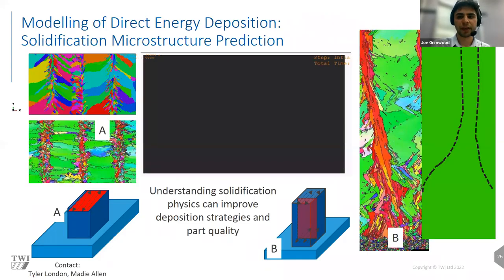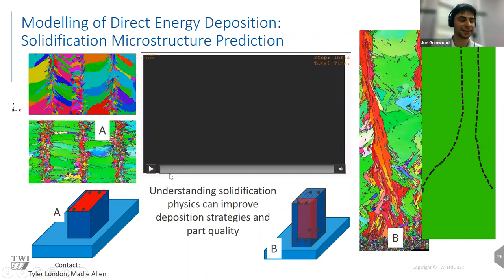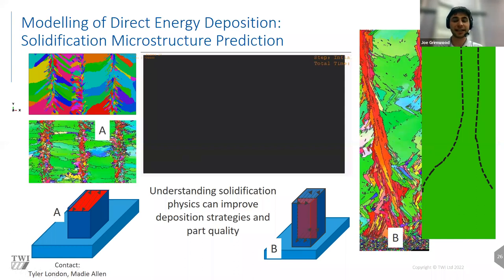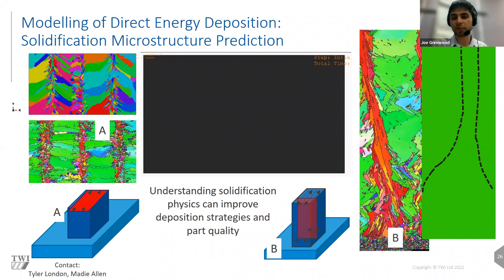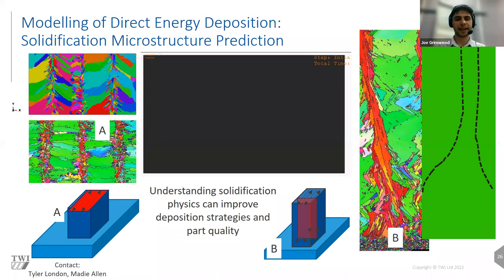This is really where modeling comes in. By understanding some of the physics and energies involved, you can build up models of exactly what's going on. You can then compare this to thermal data from the build and the actual structure from EBSD to validate and improve the model to eventually predict what's going on. We have a specific modeling team — specifically Tyler London and Maddy Allen — who work very much on this in AM at TWI, so they would be good contacts if you'd like to find out more.